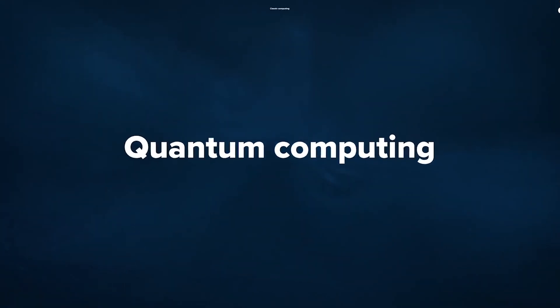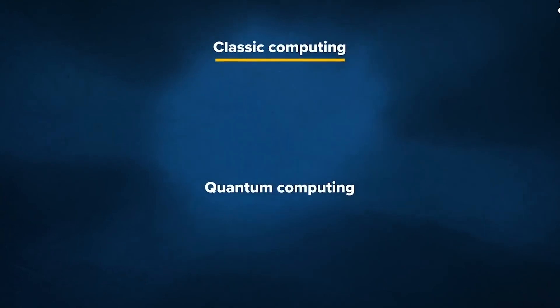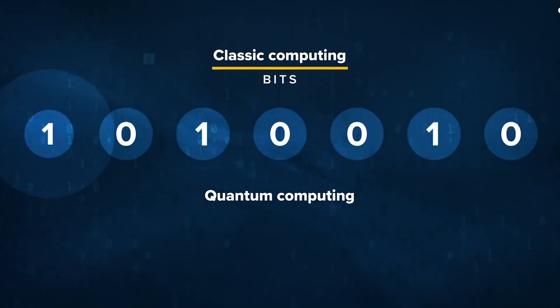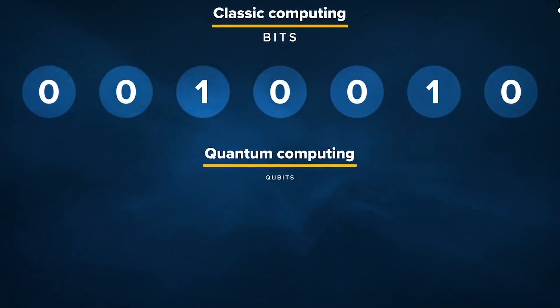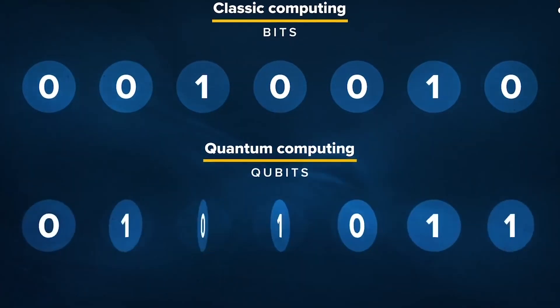Quantum computers perform calculations based on the probability of an object's state before it is measured instead of just 1s or 0s, which means they have the potential to process exponentially more data compared to classical computers.